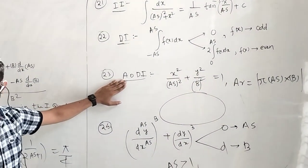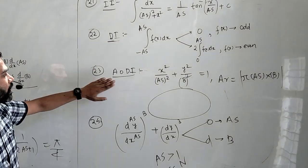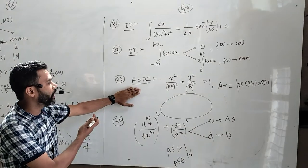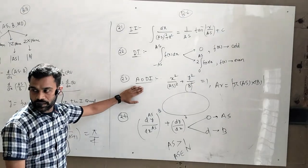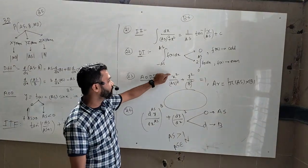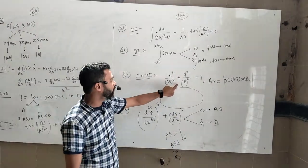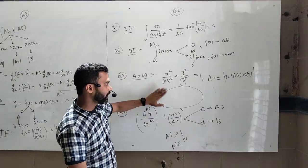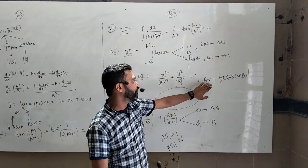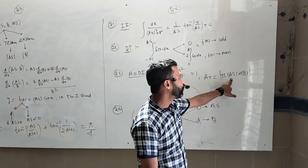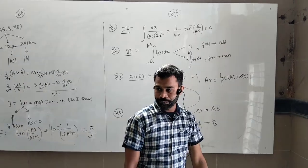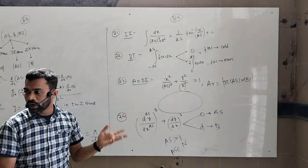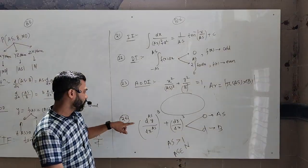Application of definite integral (chapter number 23), also called area bounded by the curve or area under the curve. For an ellipse x²/Anisar² + y²/Baya² = 1, the area will be given by π × Anisar × Baya, and we put it in modulus because area cannot be negative.